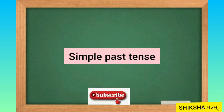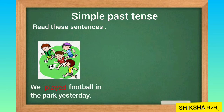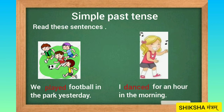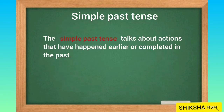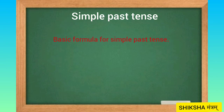Now we will see simple past tense. Read these sentences: We played football in the park yesterday. I danced for an hour in the morning. In these sentences, the verbs 'played' and 'danced' state that the activities happened earlier and are in the simple past tense. The simple past tense talks about actions that have happened earlier or are completed in the past. For example: I ran a race last year. They drank some juice in the morning.